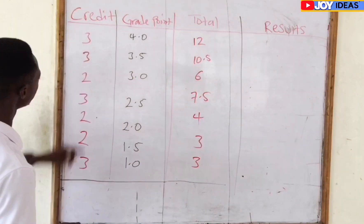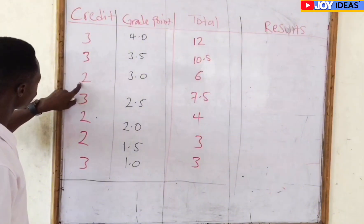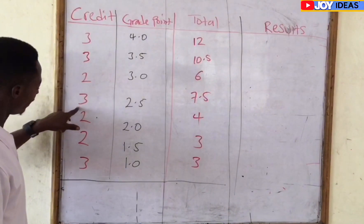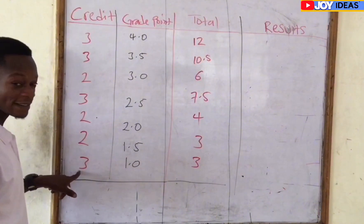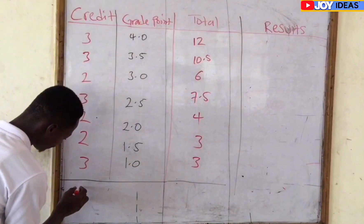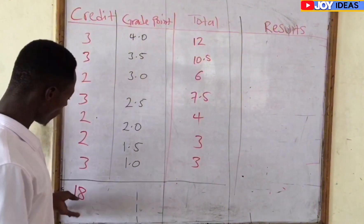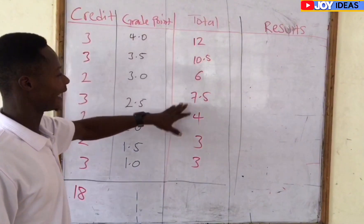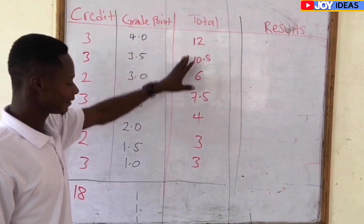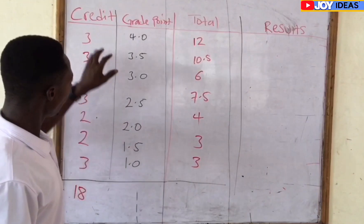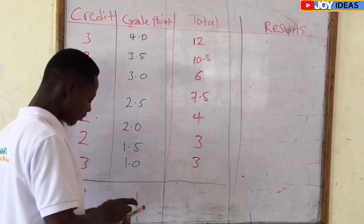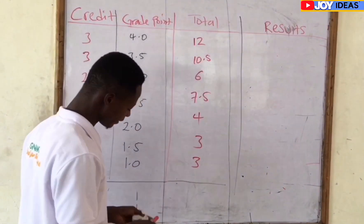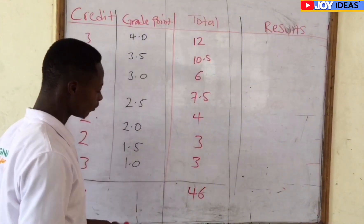You now add all the credit hours together — 3, 3, 2, 3, 2, 2, 2, 3 — and confirm the total credit hours in your portal. Then add all the results of credit hours multiplied by grade point together. We are not adding the raw grade points like 4.0 and 3.5 directly; we add the products: 12, 10.5, 6, 7.5, 4, and so on. The total credit hours come to 18.